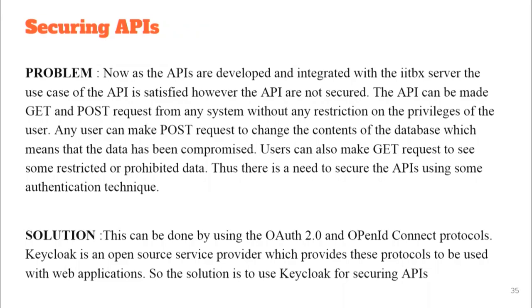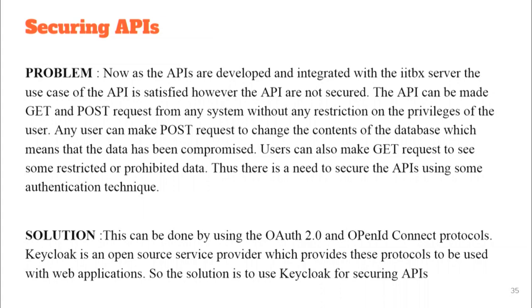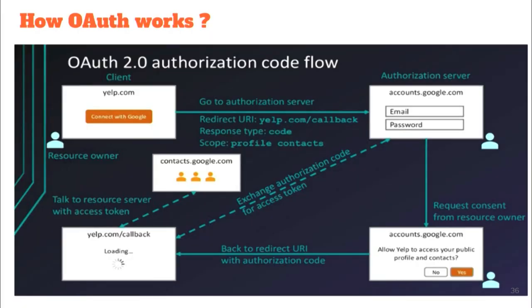Now we have all the APIs, but they are not secure — REST APIs hosted on a server can be called by anybody to get data. To secure them we need a protocol. The standard protocol used is OAuth2 with a layer of OpenID Connect. We tried using Keycloak, an open-source service provider, and were able to integrate it more than other options we tried.